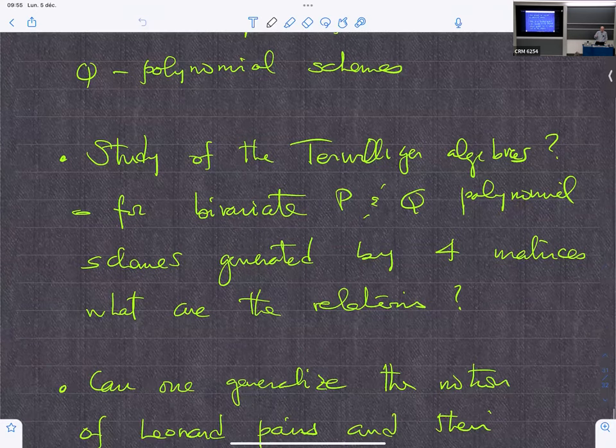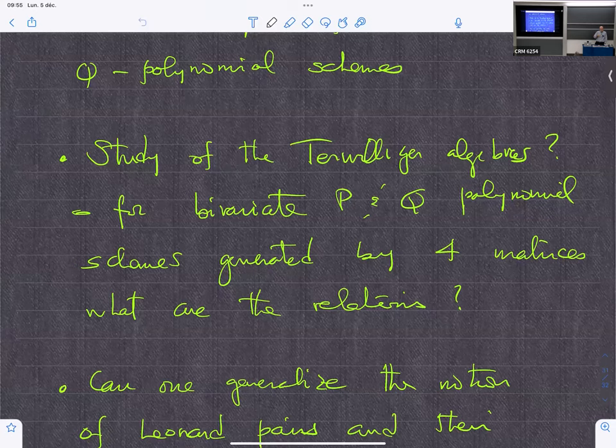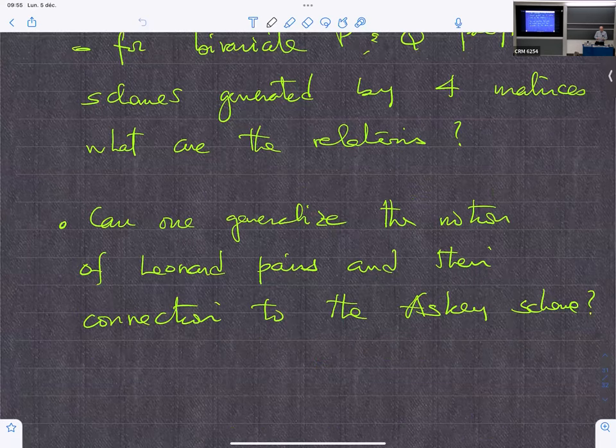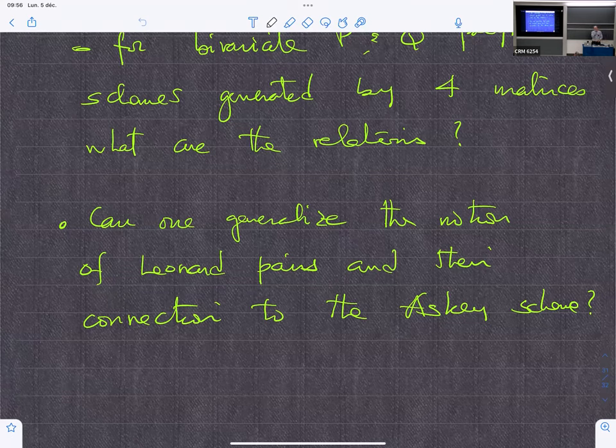So, just to summarize what to take home: what we could do is provide an interesting definition of bivariate P-polynomial association schemes of type alpha-beta. We found that many existing examples fit within the definition.